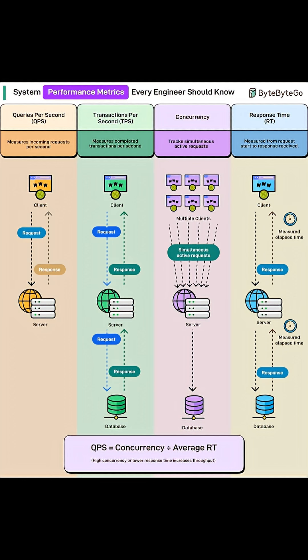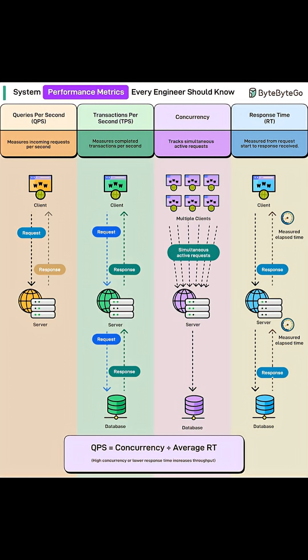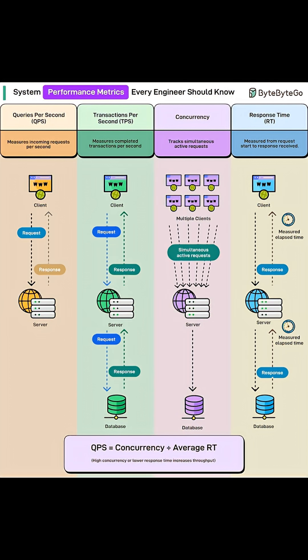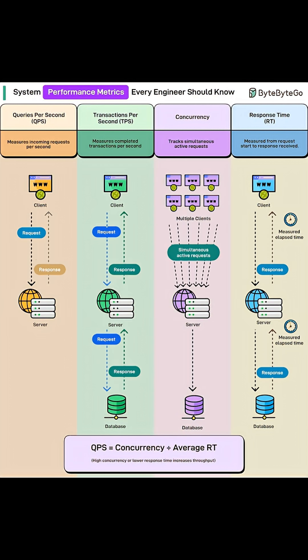First up, queries per second, or QPS. This measures how many requests your system receives every second. It's a direct indicator of traffic volume.